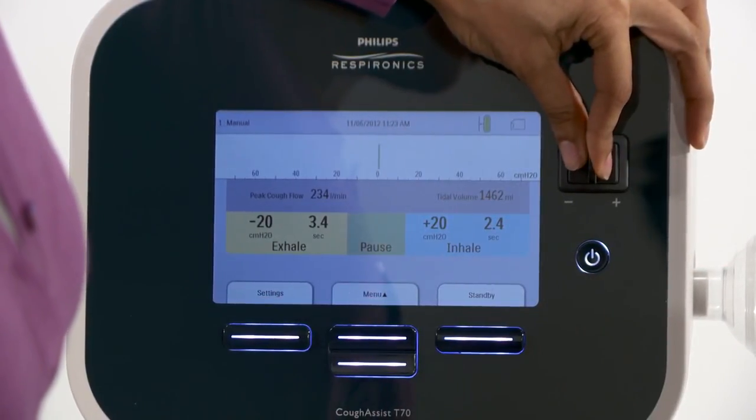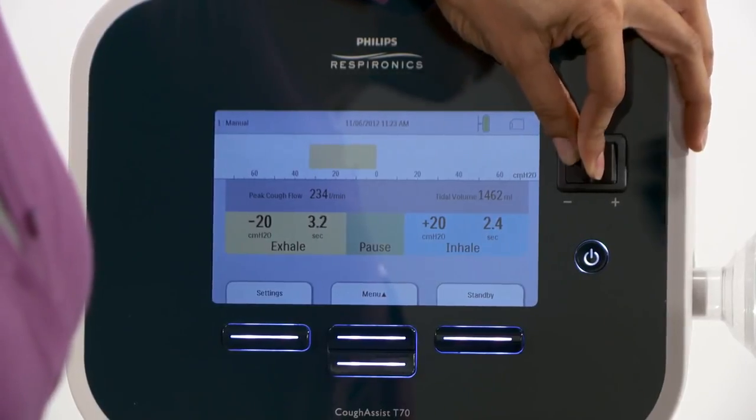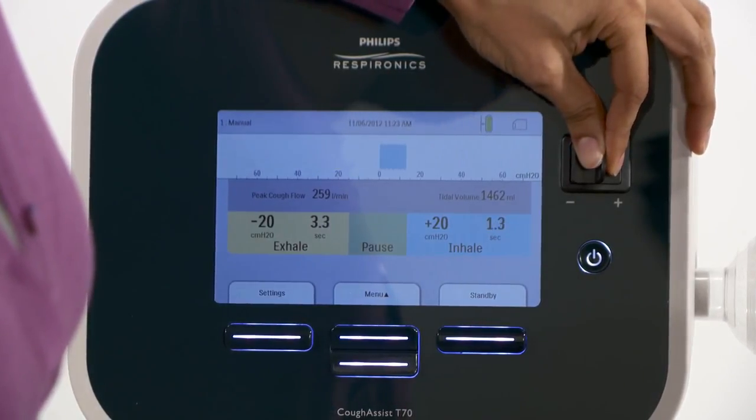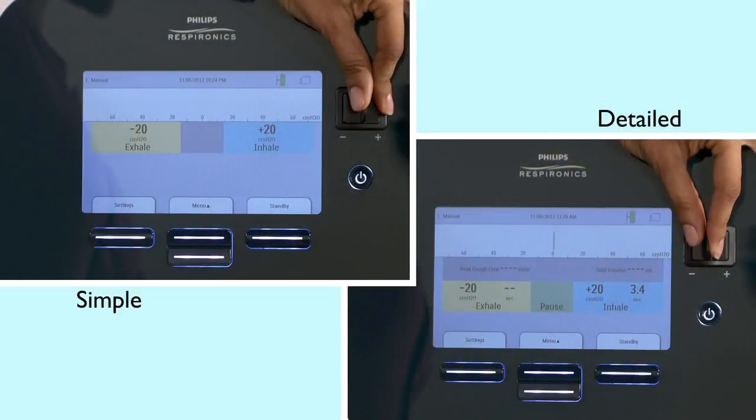Exhalation pressures appear on the left as negative numbers on the CoughAssist T70 screen. Inhalations are shown as positive. Both appear in real time. A simple screen view with less respiratory information is also available through menu options. The detailed screen provides additional clinical information.